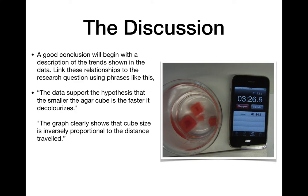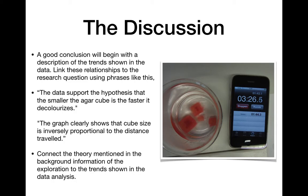So here's some good examples of phrases you could use. The data support the hypothesis that the smaller agar cube is, the faster it decolorizes. Or the graph clearly shows the cube size is inversely proportional to the distance traveled. So in this experiment here, it's a common one done in AP Biology where you have cubes of agar that are soaked with an indicator, which is phenolphthalein. You put it in alcohol or water and you see how quickly the color fades. And that's to show how surface area impacts interaction across the membrane. So some examples where we're summarizing what was found in a clear and concise way. And then you connect that theory back to the background information in the exploration and in your introduction. Connect the trends to the background, the theory to what you actually found. Connect those two together. It's a really important part of your discussion.